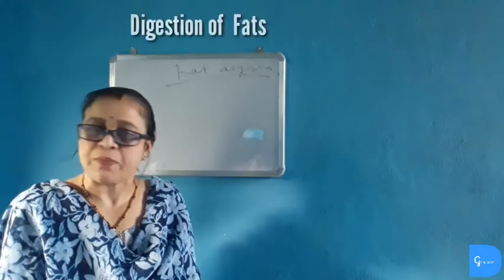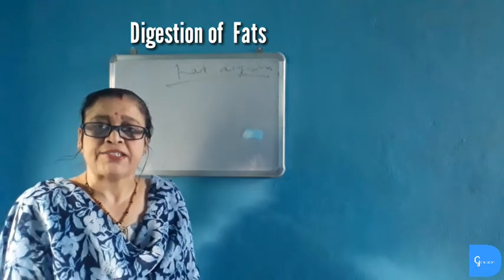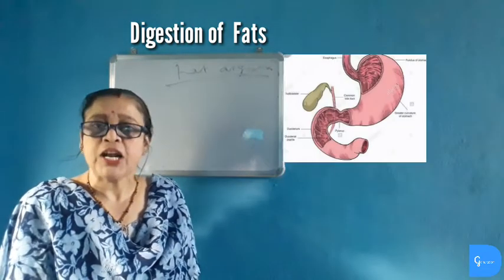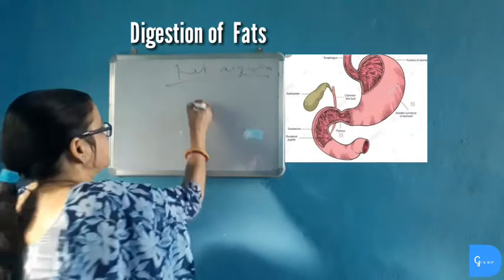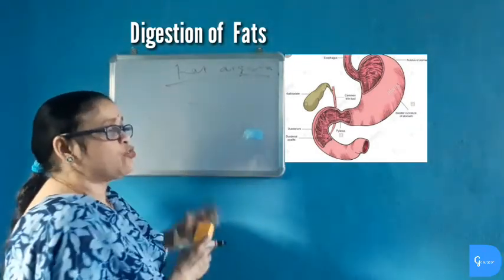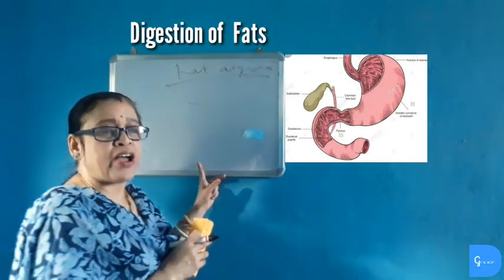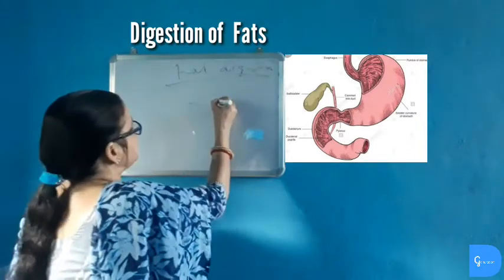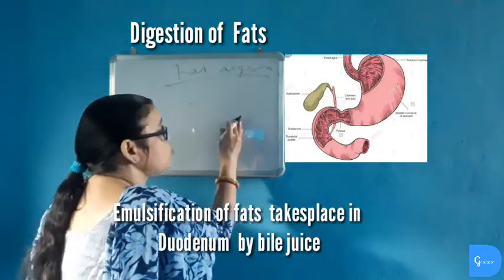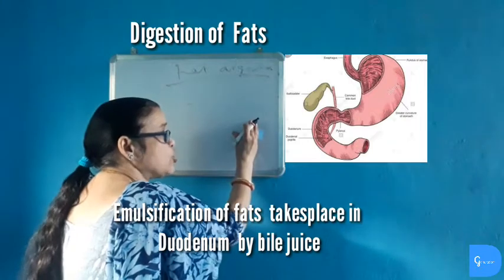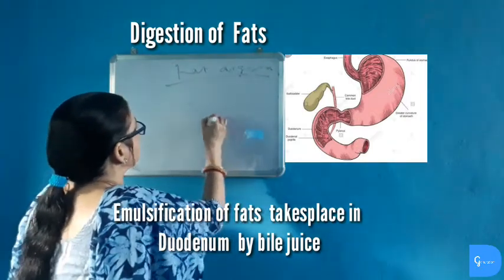Now, digestion of fat. Digestion of fat does not take place in the mouth as no enzyme is present. When the food reaches the stomach, gastric lipase is present and a little bit of fat is converted into simpler forms. From the stomach it reaches the duodenum, where bile juice is poured in via the common duct. Bile emulsifies the fat — converting it into smaller fat droplets and fat globules, including triglycerides.